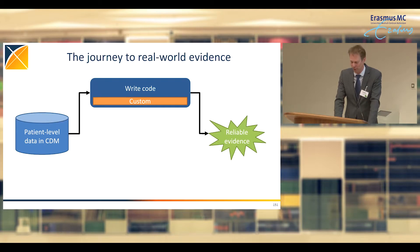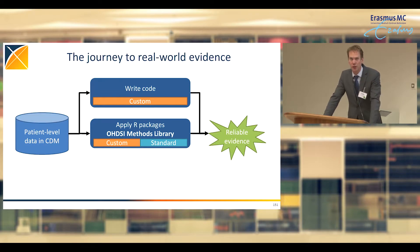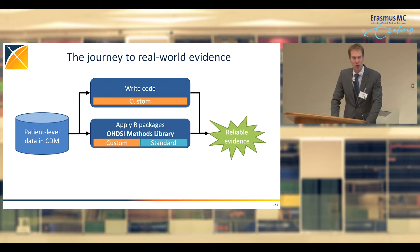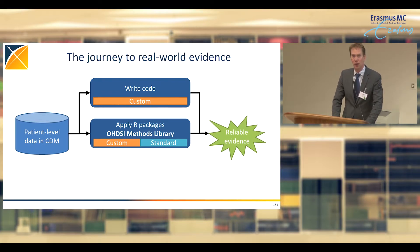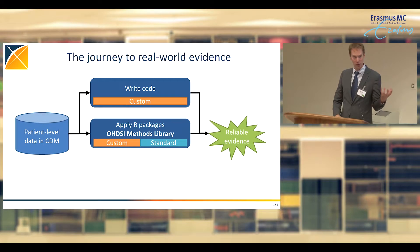Because there is now a large number of databases available in the CDM, it pays off to build tools usable across all these sites. So we've created a large set of R packages called the Odyssey Methods Library — libraries of functions you can call. Some do simple things, some very complicated things. With a single function call on a cohort of interest, you can create a large feature set, and with a second call, create a propensity or prediction model, enabling rapid study creation.